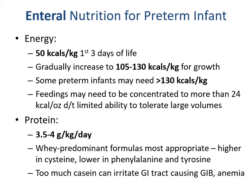Protein from enteral nutrition is approximately 3.5 to 4 grams per kilogram per day. Whey-predominant formulas are most appropriate — they are higher in cysteine and lower in phenylalanine and tyrosine. Too much casein can irritate the GI tract, causing GI bleeding and anemia.